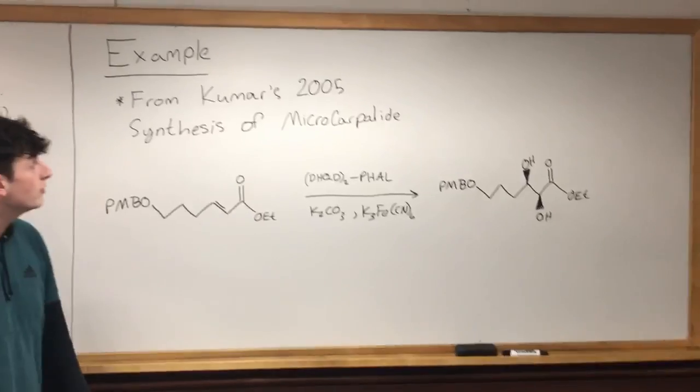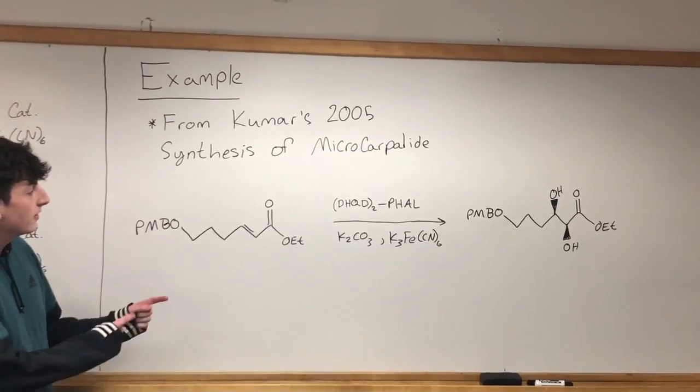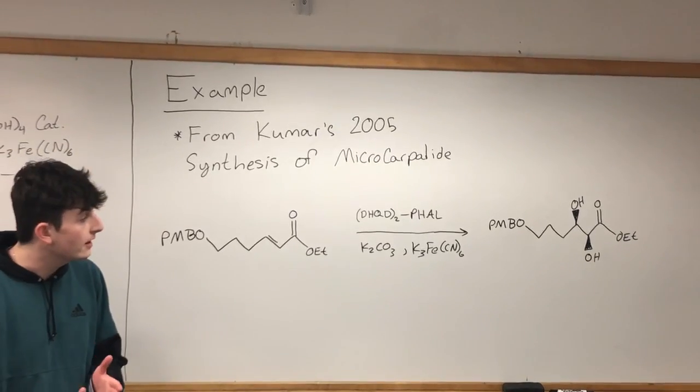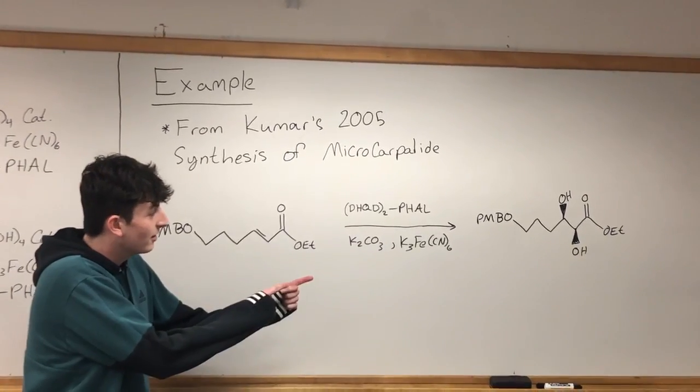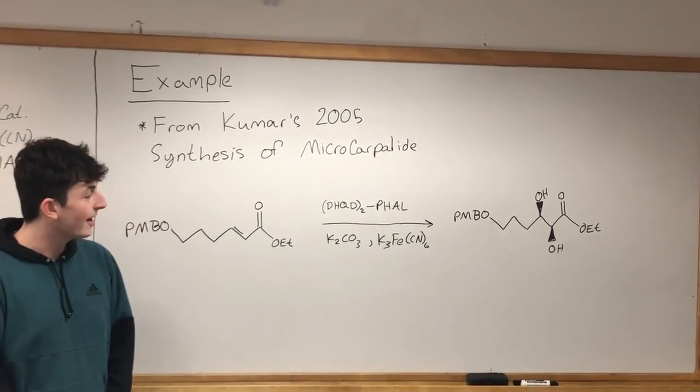Let's take a look at an example from Kumar's 2005 synthesis of microcarpolide. In this reaction, we have DHQ-2-PHAL, which is AD mix beta, and as we can see in the product, the alcohols have added from the front of the molecule as expected.